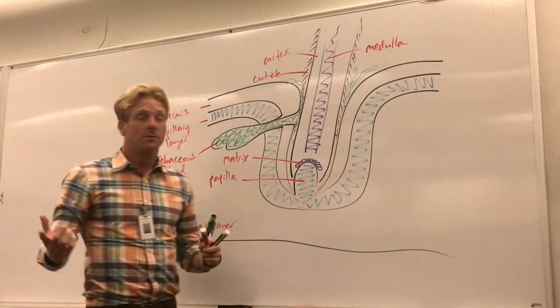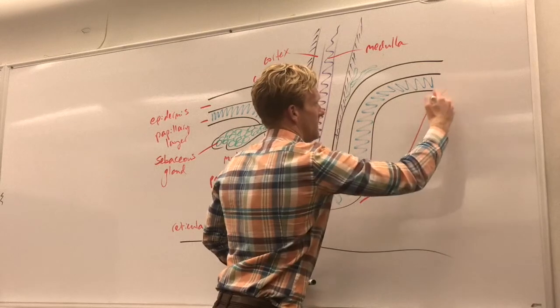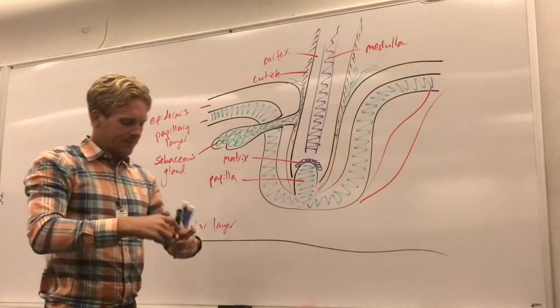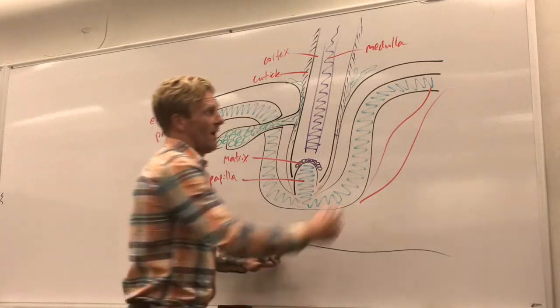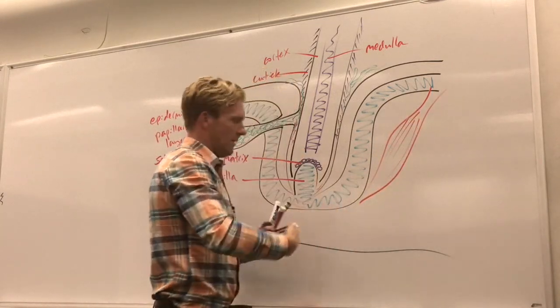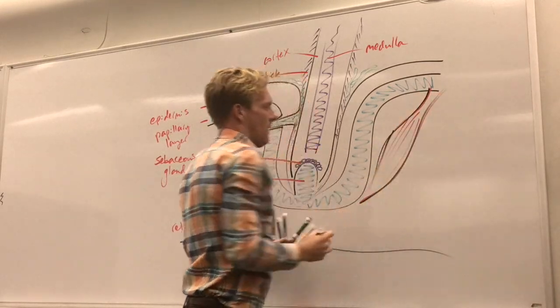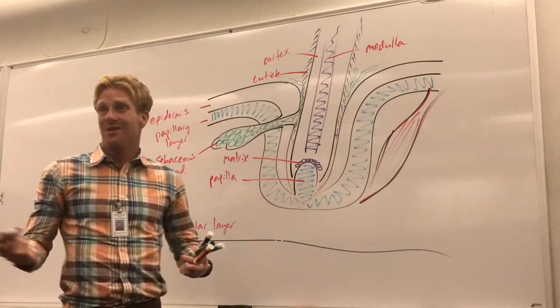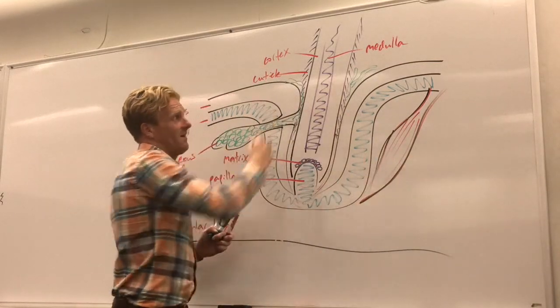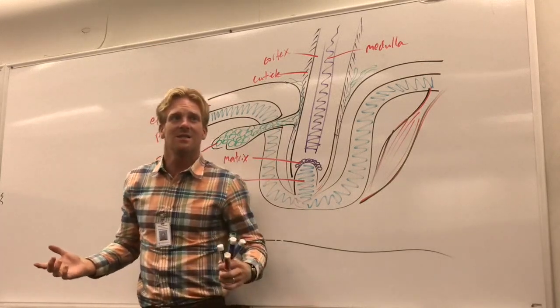Now there's also a muscle that extends from the base of the hair follicle up to the bottom of the epidermis. This is called our arrector pili muscle. I'll give it some muscle fibers and outline this guy. This arrector pili muscle, when it contracts, causes goosebumps. It will pull on the base of that hair follicle, making the hair strands stand up.